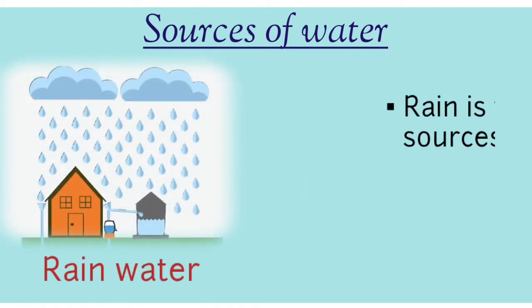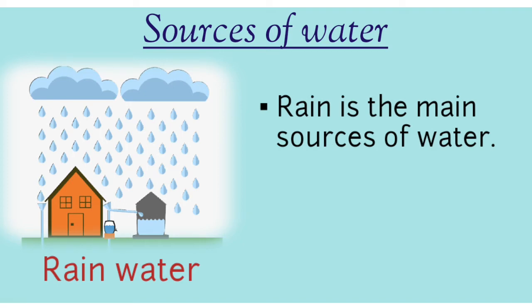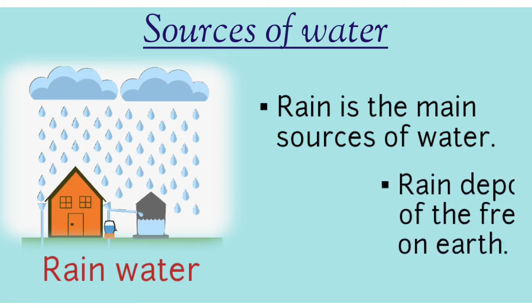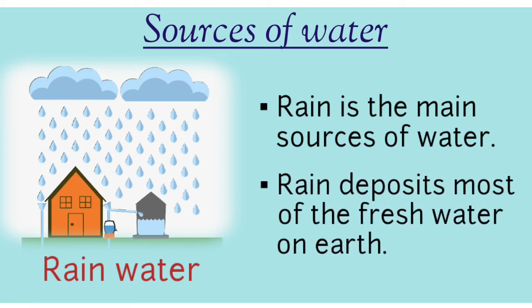Rain water. Rain is the main source of water. It means we get most of the water from rain. Rain deposits most of the fresh water on the Earth.